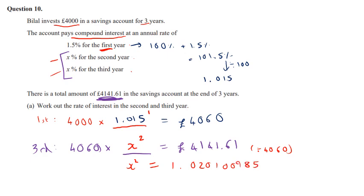So if that's what X squared is, we would then want to square root both sides. So when we square root both sides, we get X would be, let's square root that, 1.010000488.